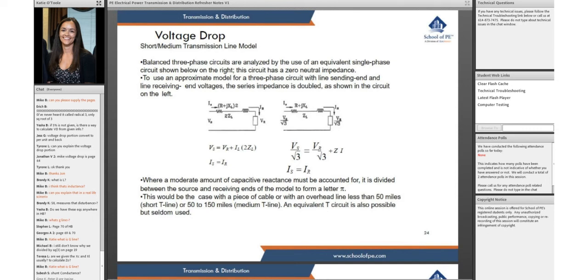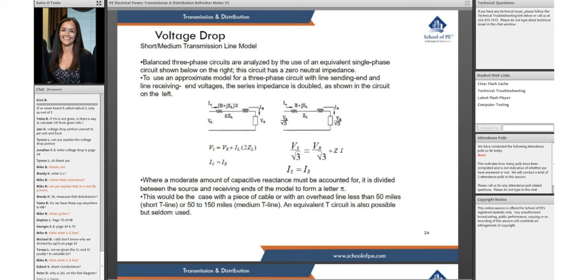Anything that is 150 miles is going to be your medium transmission lines. An equivalent T circuit is also possible but not typically used.